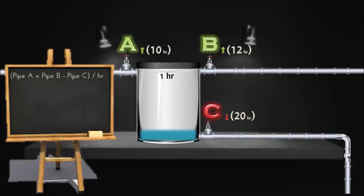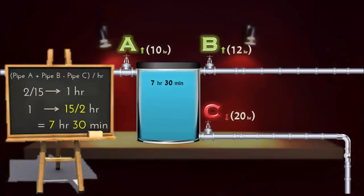To fill 2/15th part of the container, it takes 1 hour. So, to calculate the time taken to fill the whole container, simply take the reciprocal of 2 by 15 that gives 15 by 2. So, it will take 7 hours and 30 minutes to fill the container when all the three pipes are kept open simultaneously.